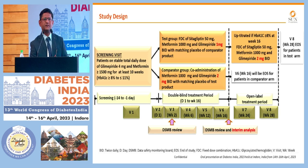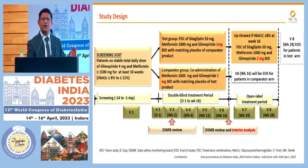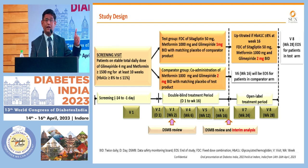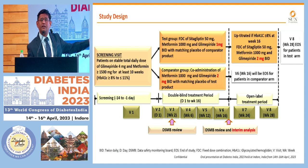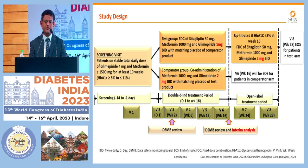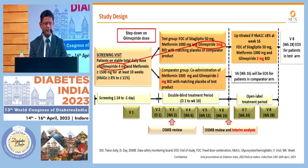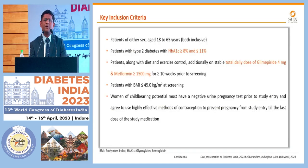Patients already on Glimepiride and Metformin combination — taking a daily dose of approximately 2000 mg Metformin and 4 mg Glimepiride — will be randomized to receive the FDC combination where Glimepiride is only 1 mg. Patients will be followed up for 16 weeks to assess improvement in diabetes control or HbA1C target. The study includes a DSMB review as well as an open-label phase to track patients who may require dose uptitration, with continuous monitoring for additional safety parameters.